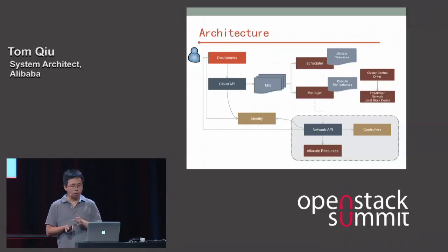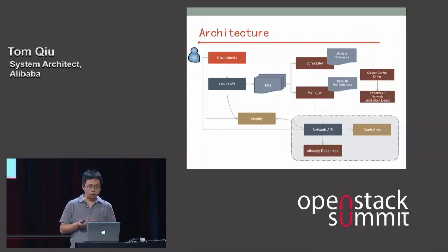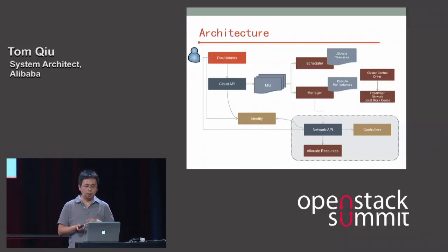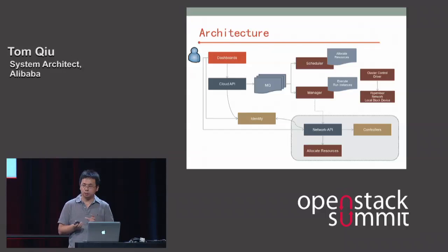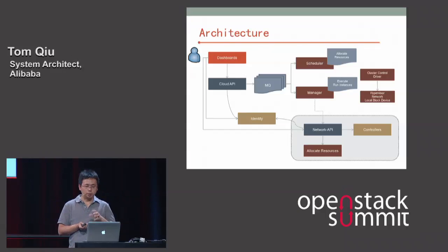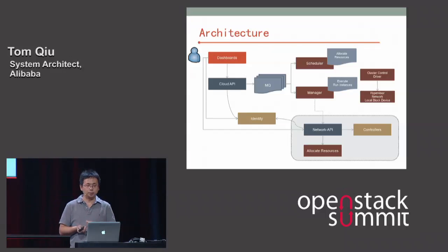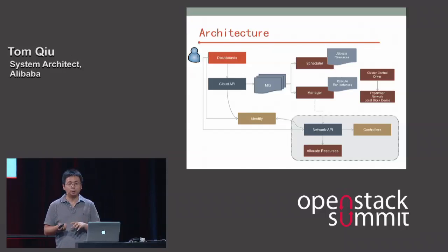The manager retrieves the driver and runs the execution sequence. First, it generates the block disk and allocates local disk via LVM. Then it configures the network to get connectivity. Finally, it configures the hypervisor and launches the virtual machine. Our older design did not separate the network from this system, but starting this year we began a new branch where the network subsystem runs as an independent component providing an interface for other systems.